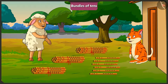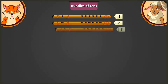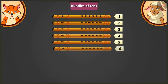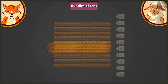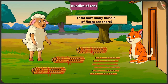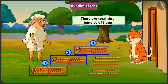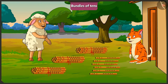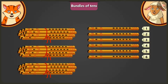Come on. Now, let us count these flutes. Lily, how many flutes are there in one bundle? 1, 2, 3, 4, 5, 6, 7, 8, 9, 10. One bundle here has 10 flutes. How many bundles of flutes are there in total? 1, 2, 3. There are total 3 bundles of flutes. Lily, now tell me how many flutes are there in all? There are 30 and 6 — total 36 flutes.